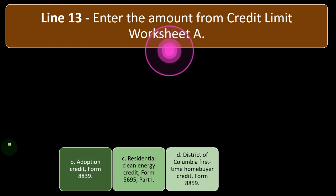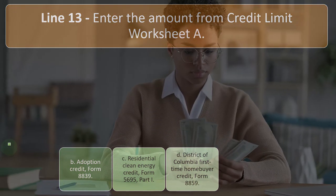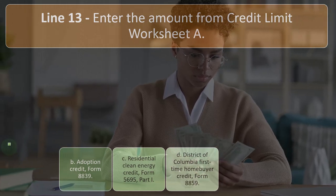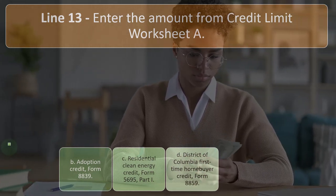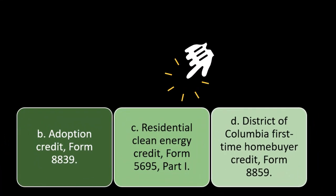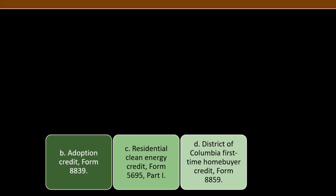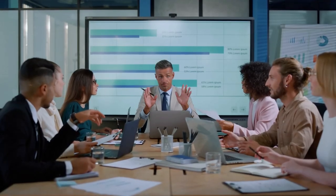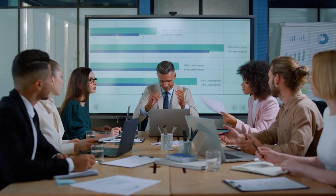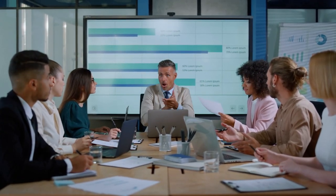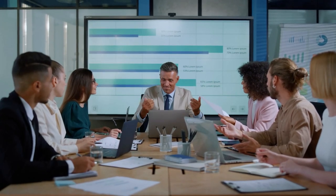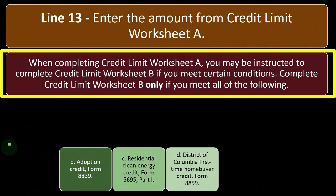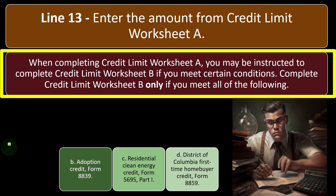Line 13: enter the amount from Credit Limit Worksheet A. We won't go into the worksheet in a lot of detail here because we want to get the general concept down, and then rely to some degree on software to communicate in terms of projections and tax planning, as well as explaining the credits. We can use the software to do the calculation and then verify it to make sure it is correct. When completing Credit Limit Worksheet A, you may be instructed to complete Credit Limit Worksheet B if you meet certain conditions. Complete Worksheet B only if you need all of the following.